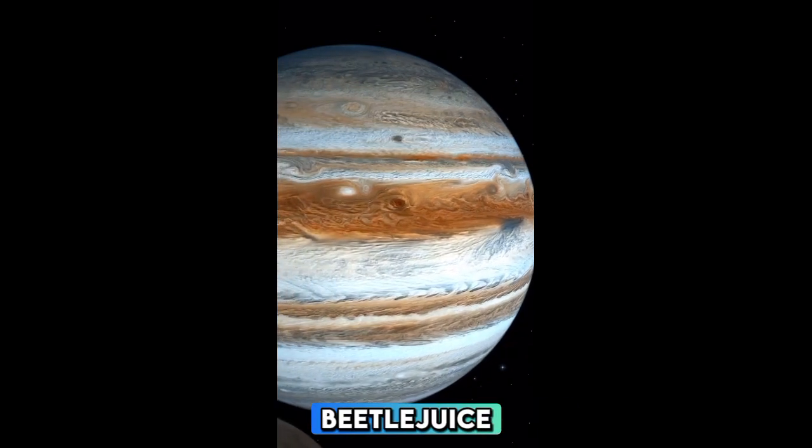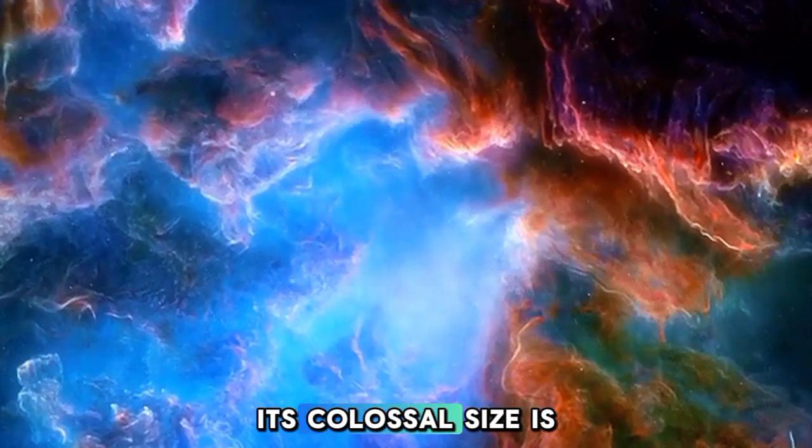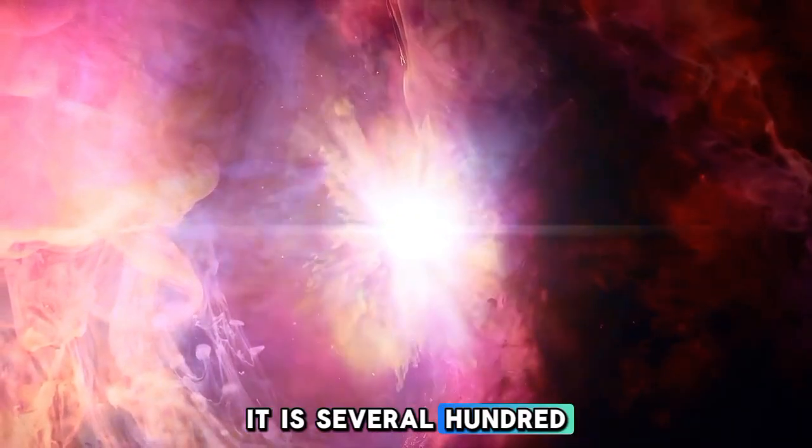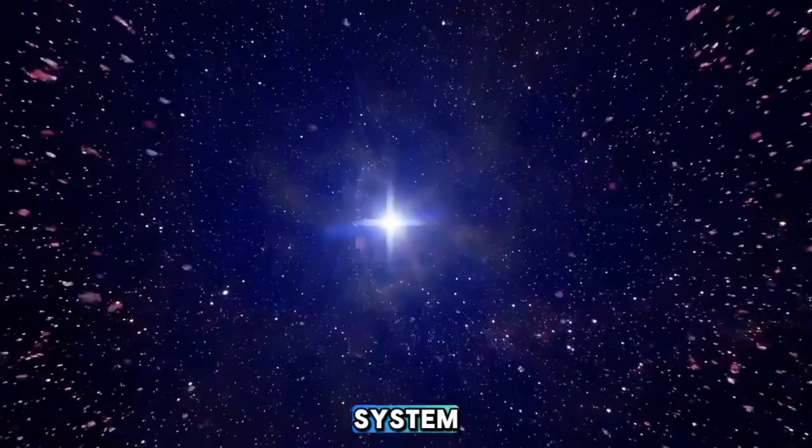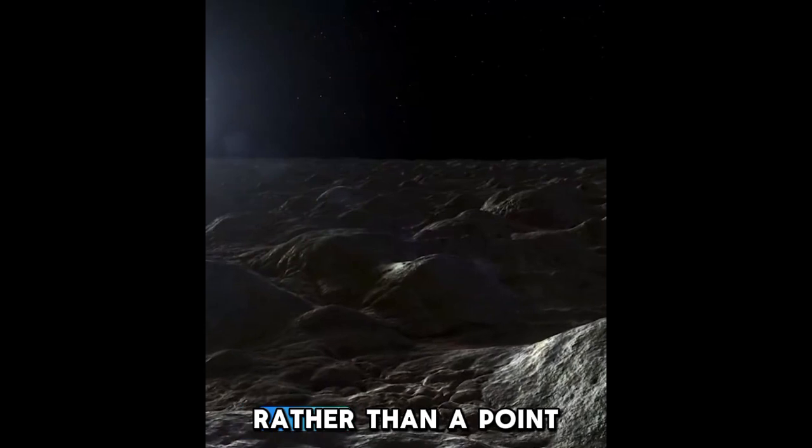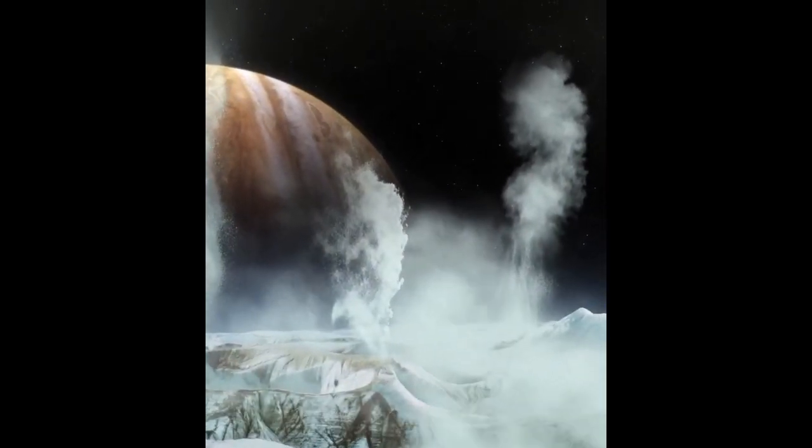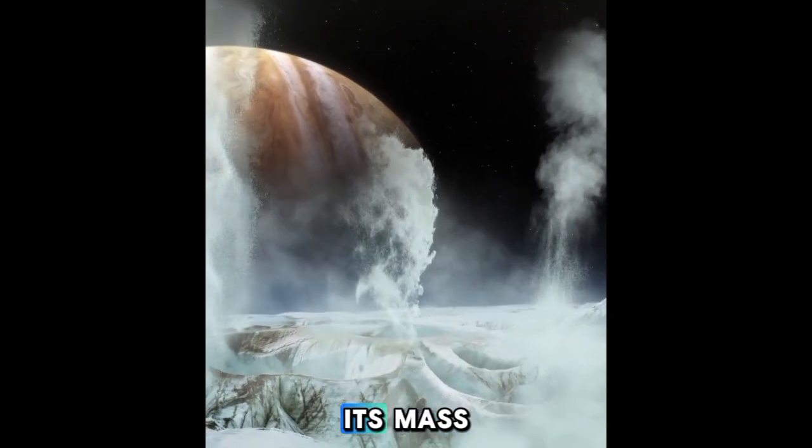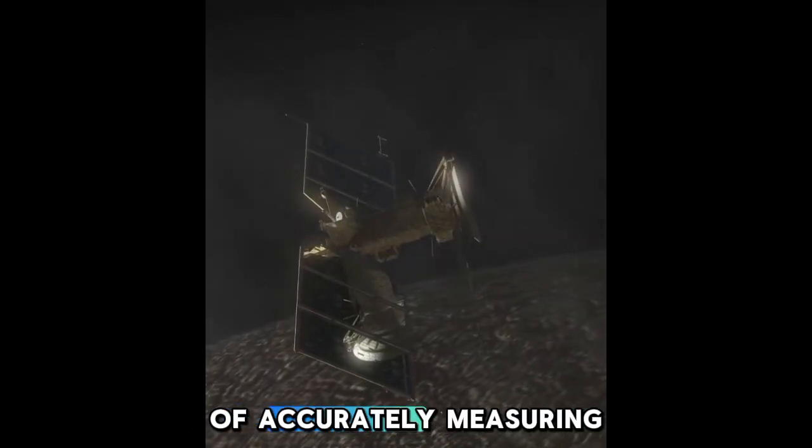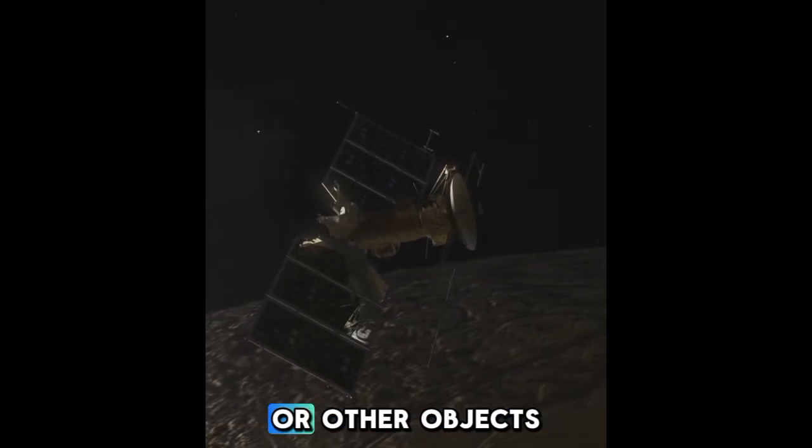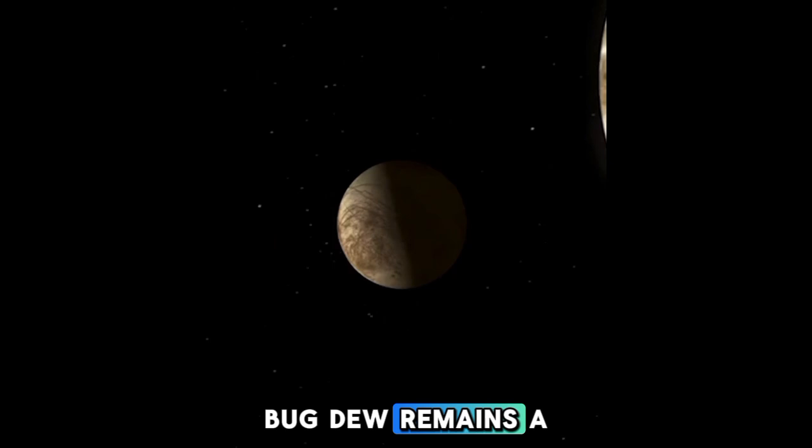Betelgeuse is an enormous star located in the constellation Orion, about 600 light-years from Earth. Its colossal size is one of its most striking features. It is several hundred times greater than our Sun in radius and could easily encompass Jupiter's orbit if placed at the center of our solar system. This incredible size allows Betelgeuse to appear as a disk rather than a point of light when viewed through powerful telescopes, unlike most other stars. Despite its immense size, Betelgeuse is not the most massive star. Its mass ranges from about 12 to 20 times that of the Sun.